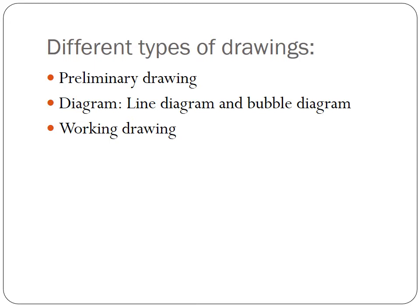The second type are diagrams which are either drawn to scale or not, to show access, circulation, installations, and functions of the parts of the building in a simplified way, for which we will be using a bubble diagram or line diagram.